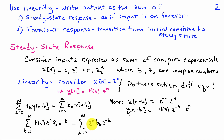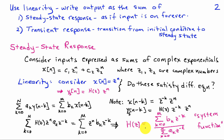Notice that z^n appears on both sides, so it cancels. And since H(z) doesn't depend on k, I can bring it outside the sum. I find that H(z) equals the sum from k equals 0 to m of b_k z^{-k}, divided by the sum from k equals 0 to n of a_k z^{-k}. This is actually a pretty important characterization of the system — H(z) is known as the system function.